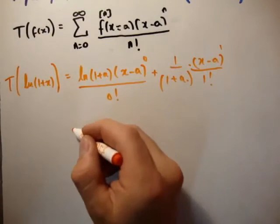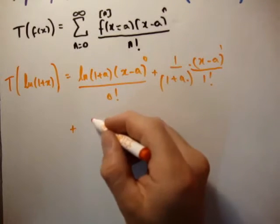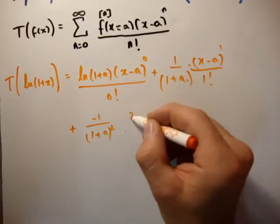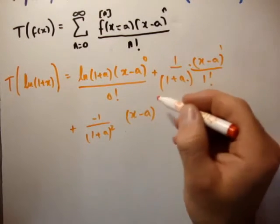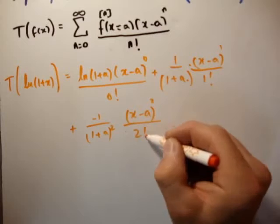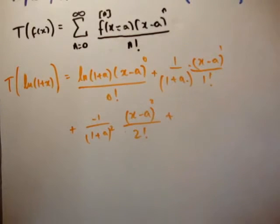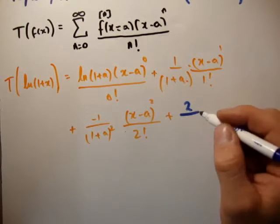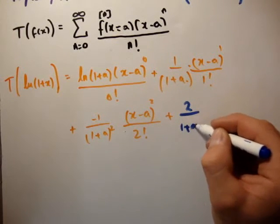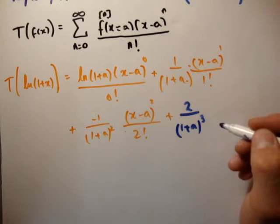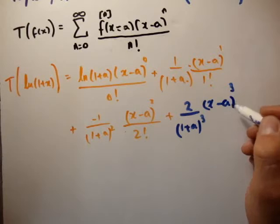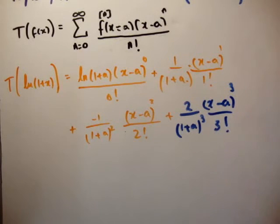Plus, we'll do one more. We have negative 1 over 1 plus a squared, we have x minus a squared, and we have 2 factorial. And I said I wouldn't, but I'll do one last one. We have 2 over 1 plus a cubed, we have x minus a cubed. Sorry, yeah, x minus a cubed divided by 3 factorial.